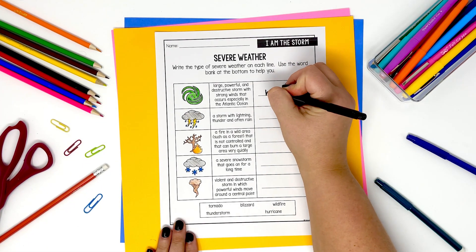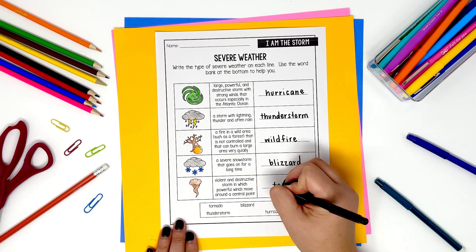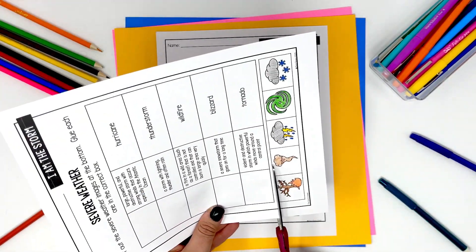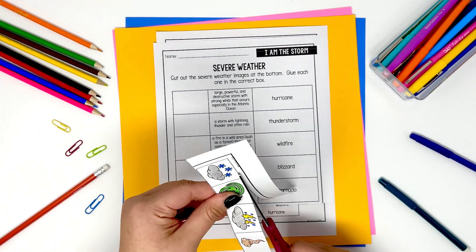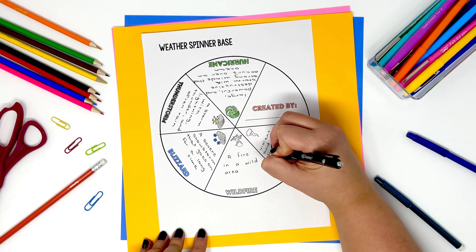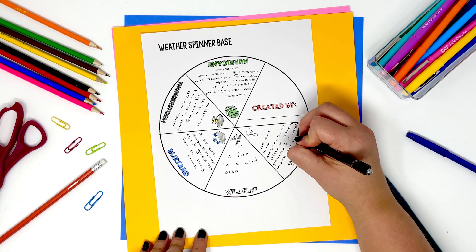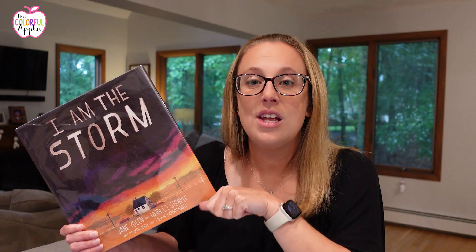Together or on their own, students can work on an activity sheet to help them categorize the different storms. They can do a cut-and-paste activity or a fill-in-the-blank that gives an image of the storm as well as a description of what it sounds like, looks like, and feels like. Then together you can have them create a severe weather spinner — around the circle students write the attributes of each storm: what does a hurricane look like, what does a tornado look like. They can use that spinner independently, share it with others, and have it for reference during your science unit.